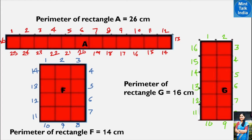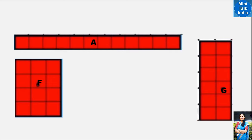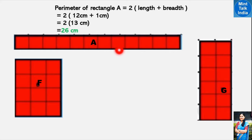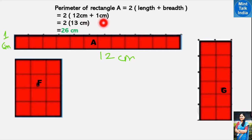We can also verify using the formula: perimeter = 2 × (length + breadth). For rectangle A, the total squares are 12, so the length is 12 centimeters. The breadth is 1 centimeter. So: 12 + 1 = 13, and 13 × 2 = 26. Rectangle A has a perimeter of 26 centimeters. For rectangle F, length is 3 cm and breadth is 4 cm: 3 + 4 = 7, and 7 × 2 = 14 centimeters.